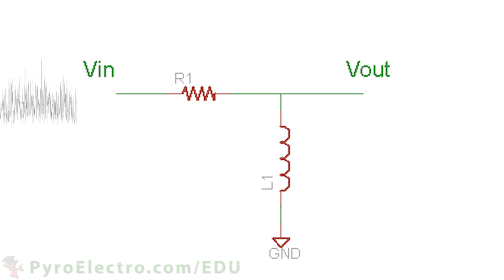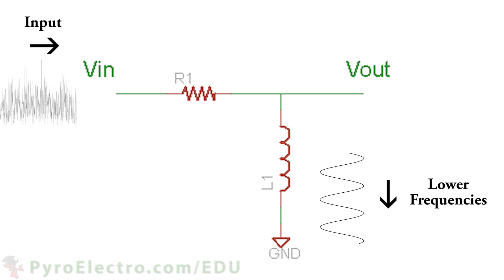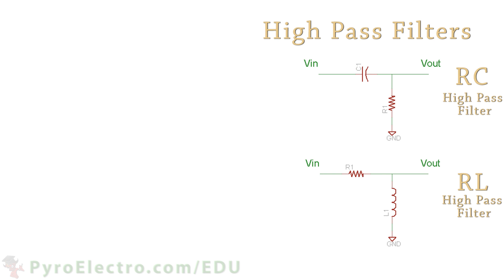If we perform the same experiment but instead use an inductor connected to ground, again, certain frequencies of the signal will prefer to go through the inductor to ground, and the rest will continue through the circuit. The formula to know which frequencies will pass through and which will get filtered looks like this.